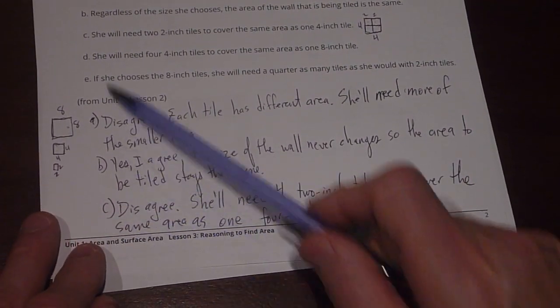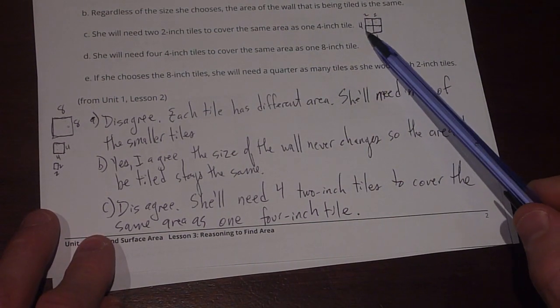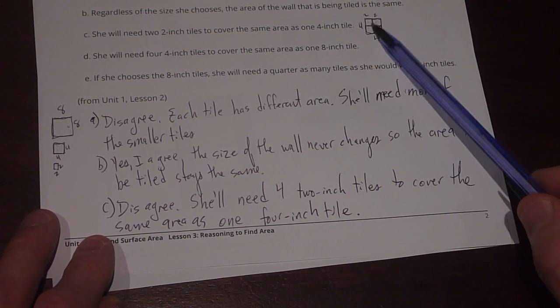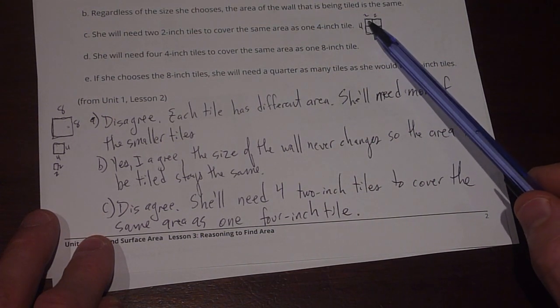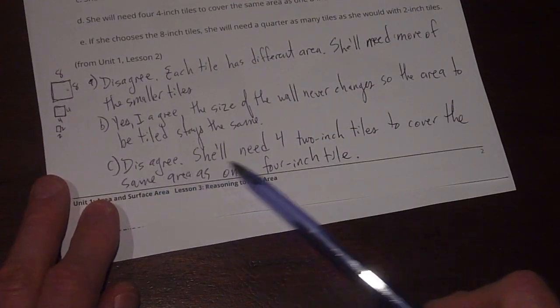Okay. So C says she'll need two 2 inch tiles to cover the same area as one 4 inch tile. I disagree with that because if this is a 4 by 4 tile, we split it up into 2 inch tiles, she'll need 1, 2, 3, 4 tiles to cover the same amount of space. So I disagree here.